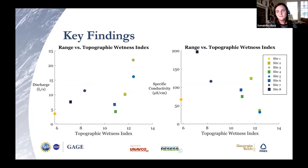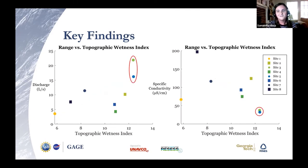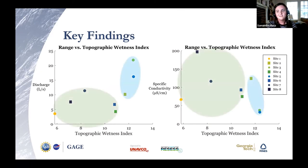Here we have the range of discharge and specific conductivity versus topographic wetness index. While these graphs don't display a perfect relationship, we do see general positive and negative relationships. However, we should note that site one doesn't fall into this well, because it's downstream from a fault, so it should continue to be noted as an outlier. We also see great examples with sites three and five, where a high topographic wetness index correlates to a higher standard deviation of discharge and a lower standard deviation of specific conductivity, with the inverses being true for sites seven and eight. The lower standard deviation of discharge and increased standard deviation of specific conductivity grouped together sites one, four, six, seven, and eight.